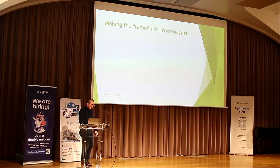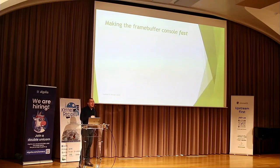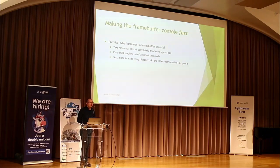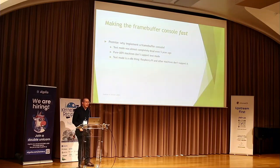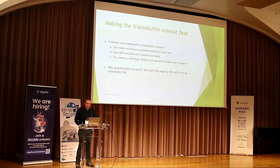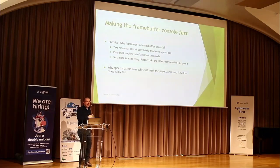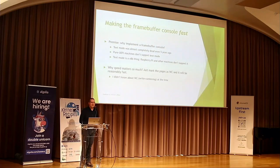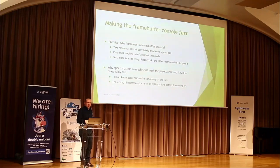Now for something more interesting: making the framebuffer console fast. Why implement a framebuffer console at all? TextMode was already dead five years ago and it's just an x86 thing — I want to be able to run on Raspberry Pi or modern pure-UEFI machines, so I had no choice. Speed matters because this laptop has a Retina display at 3200x1800. The original naive implementation took 2.5 milliseconds per character — you could literally see the screen redrawing. Meanwhile, Linux's framebuffer console flies. I knew I was doing something wrong but didn't yet know about write-combining.